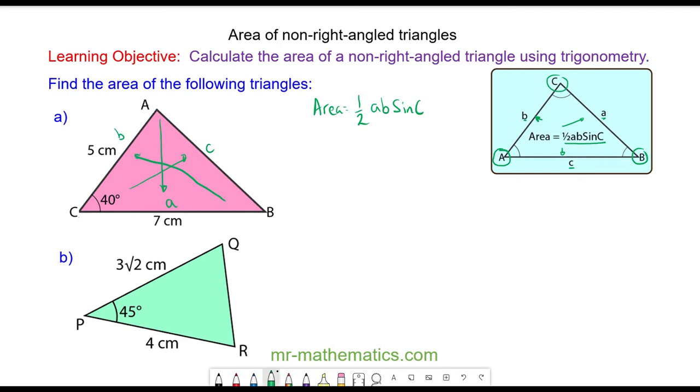So we can substitute these values into our formula. The area is equal to one half of A, which is 7, multiplied by B, which is 5, multiplied by the sine of angle C, which is the sine of 40 degrees.